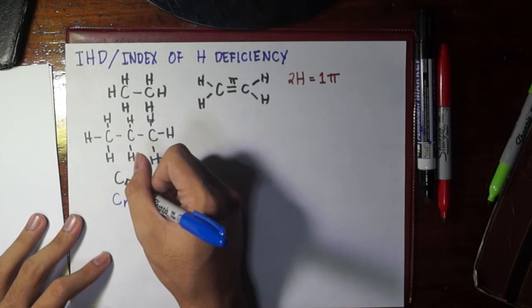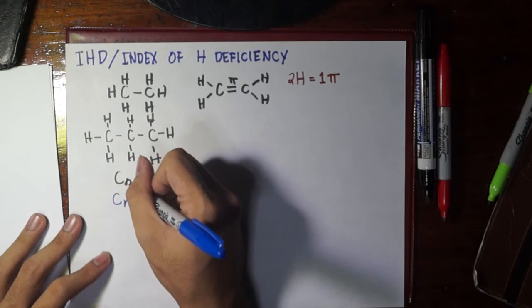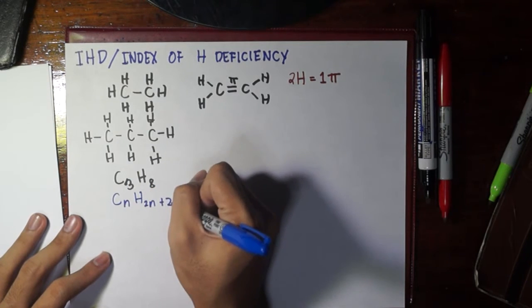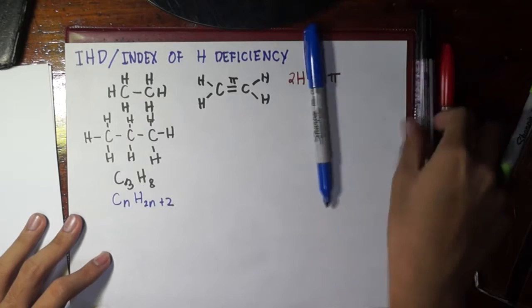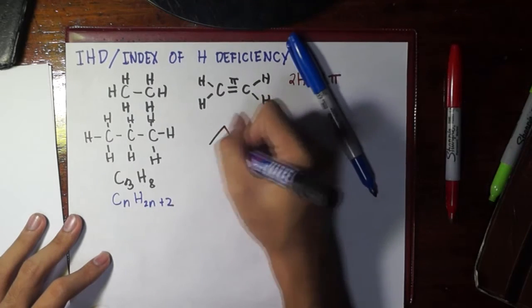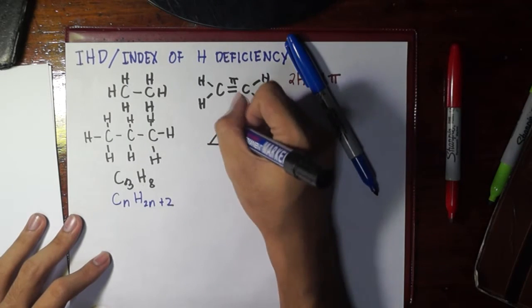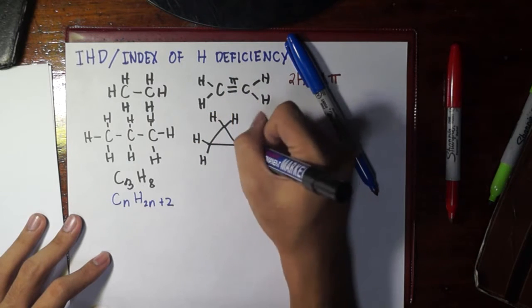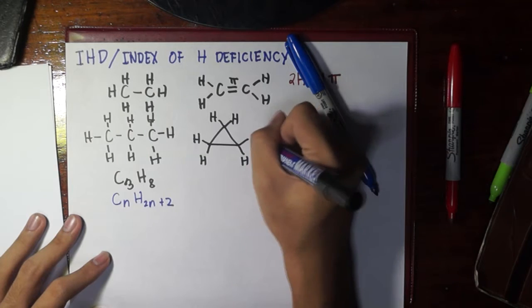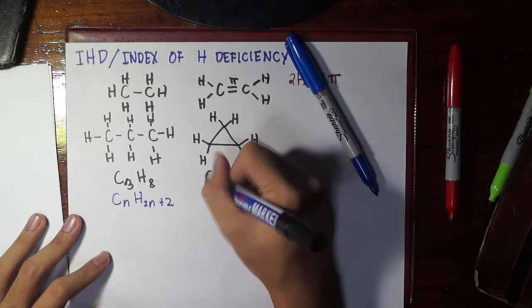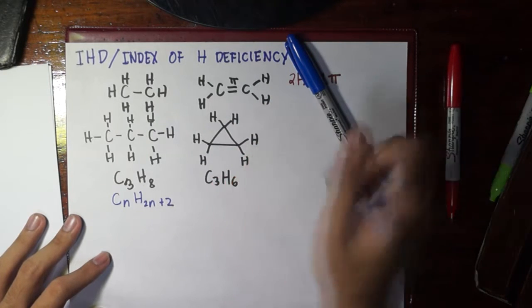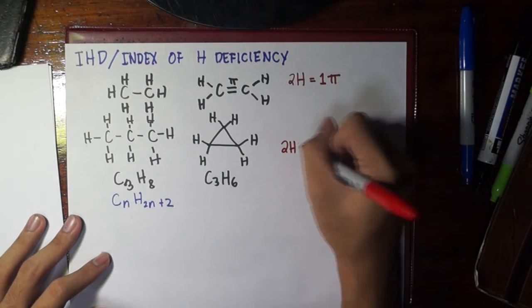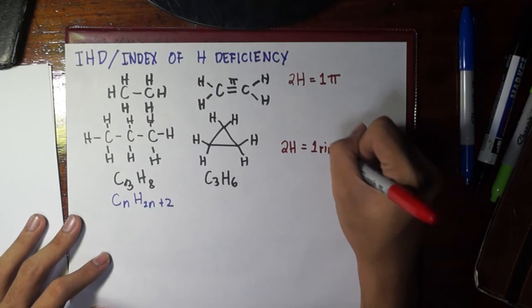For example, in propane, n is 3, and 8 is the result of 2 times 3, which is 6, plus 2, that is 8. How about in cyclopropane? The number of hydrogens is quite different. If you count them, we would have 6 only. So, what does that mean? In exchange for 2 hydrogens, you're able to come up with 1 ring.